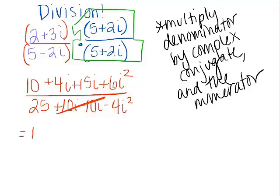So let's see what we now get. Our numerator becomes 10 plus 19i plus 6i squared. But remember, i squared is negative 1. So that's really a minus 6 over 25 minus 4i squared. But remember, i squared is negative 1. So that's really a 25 plus 4.